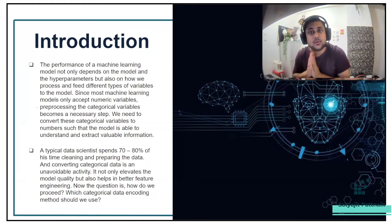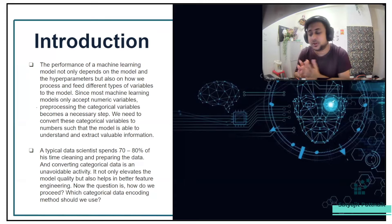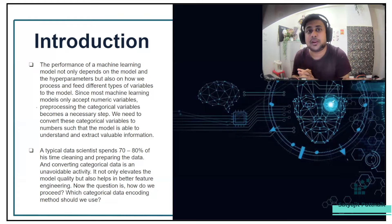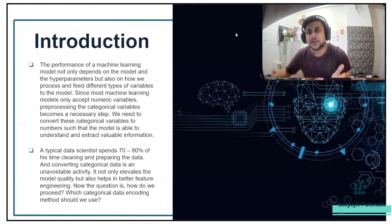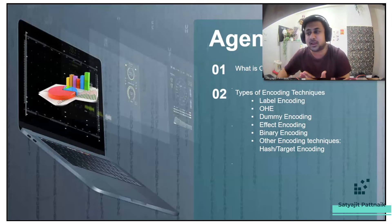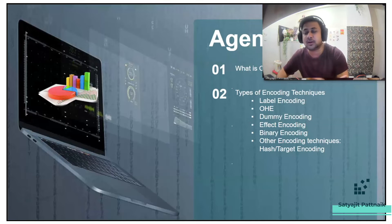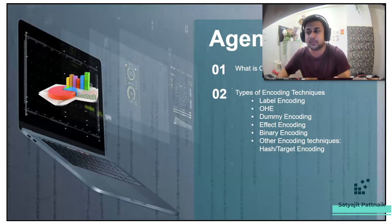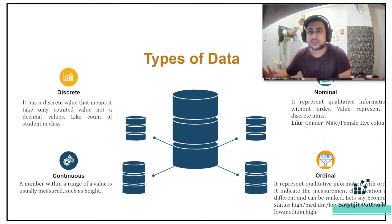The question is: which categorical data encoding method should we use? Many people use one-hot encoding or label encoders, but there are a lot of encoding techniques people are not aware of. This video covers what are the different techniques available. The agenda includes: categorical variable analysis, label encoders, one-hot encoding (OHE), dummy encoding, effect encoding, binary encoding, and other techniques like hash encoding and target encoding.